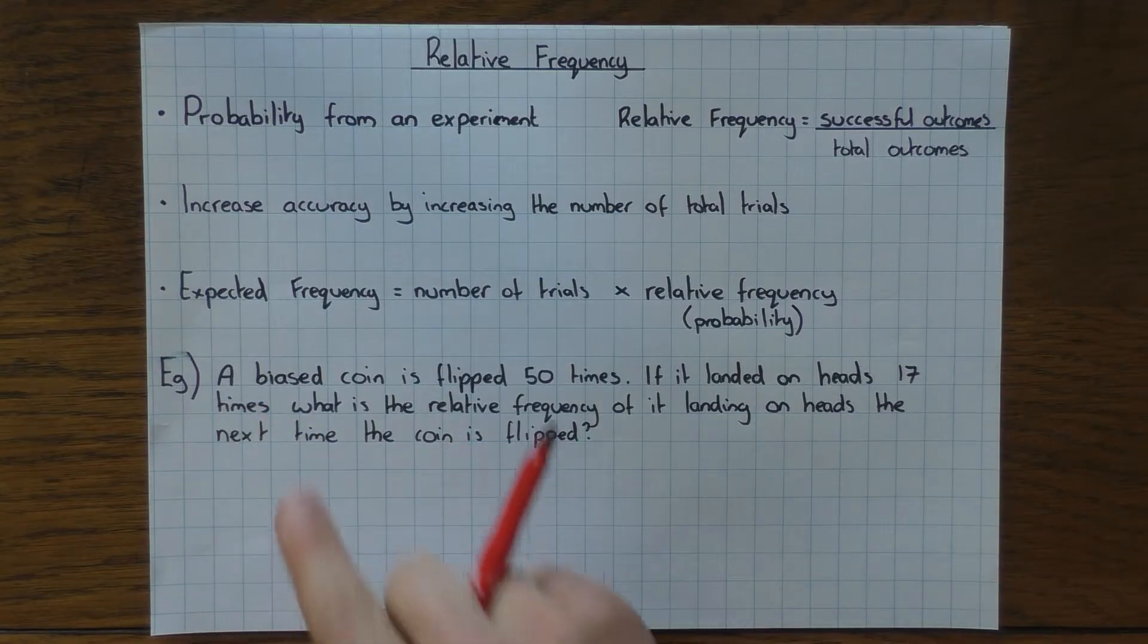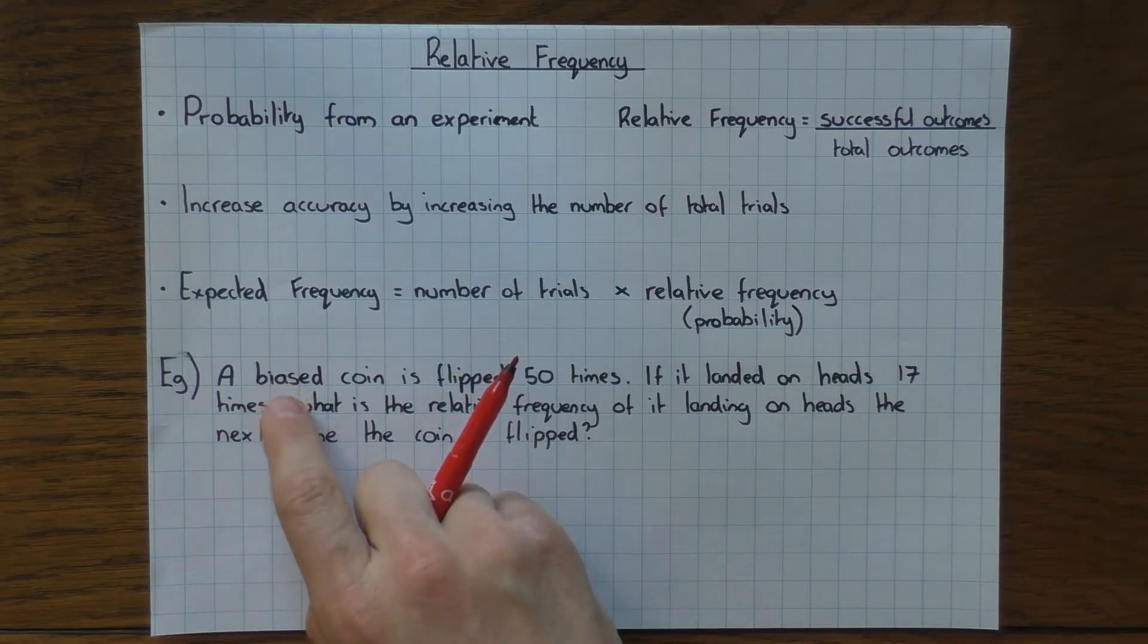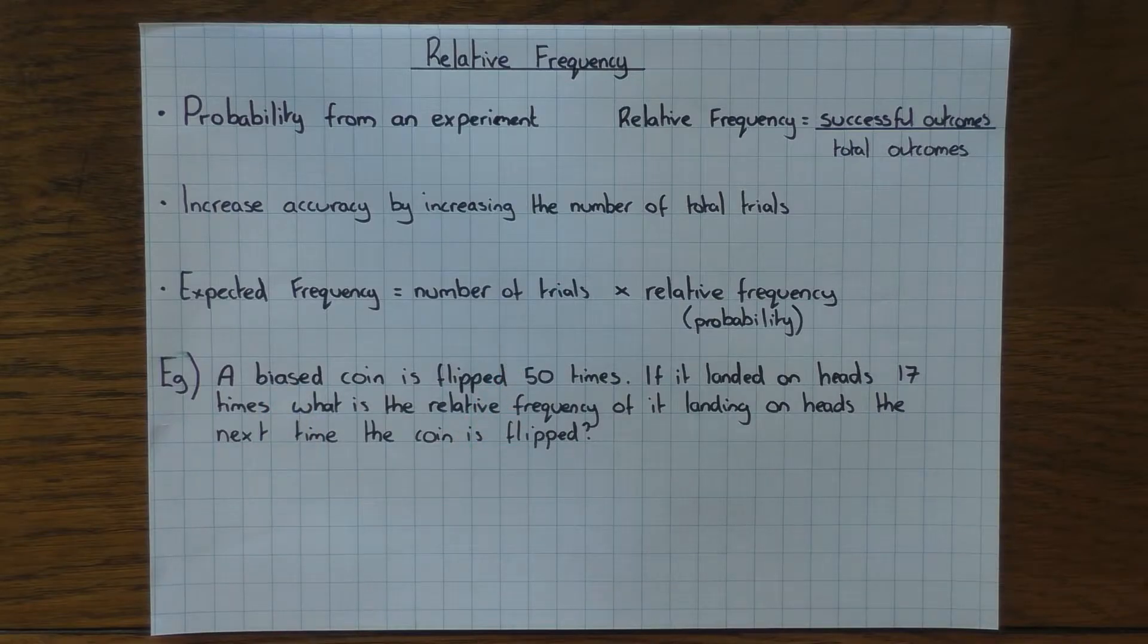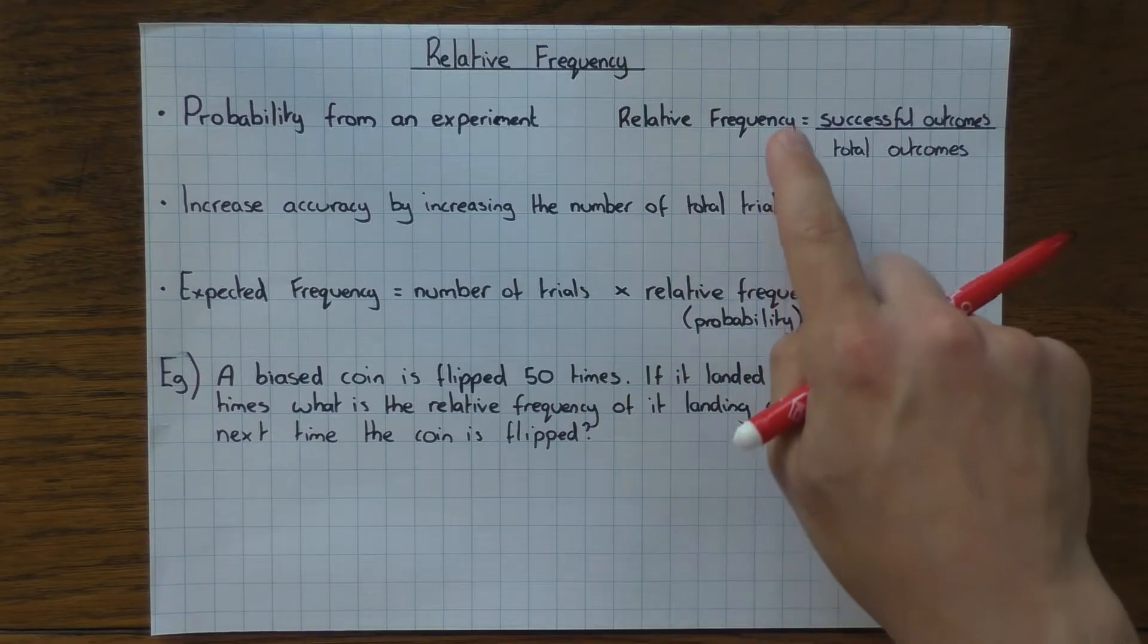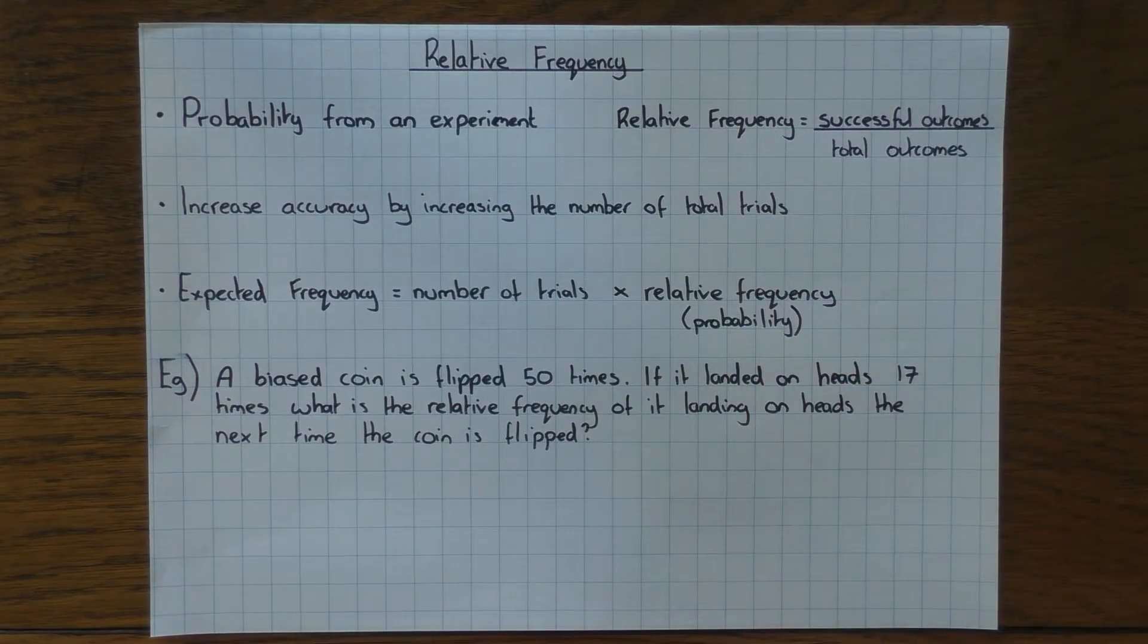A biased coin—biased means that it's not fair—is flipped 50 times. If it landed on heads 17 times, what is the relative frequency of it landing on heads the next time the coin is flipped?